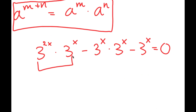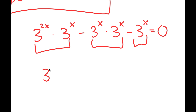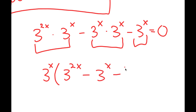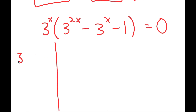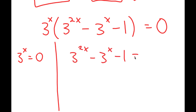Now all of my terms here have 3 to the power of x in them, so I can factor out 3 to the power of x. So now I get 3 to the power of x times 3 to the power of 2x minus 3 to the power of x minus 1 is equal to 0. This gives me two equations: 3 to the power of x equals 0, and 3 to the power of 2x minus 3 to the power of x minus 1 equals 0.